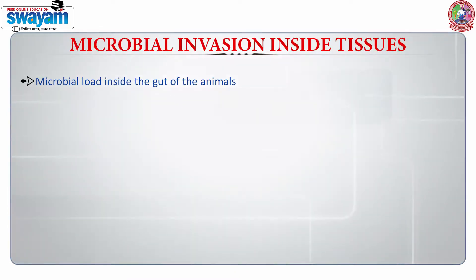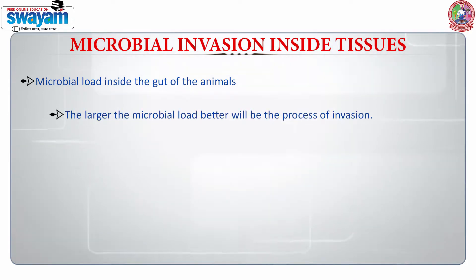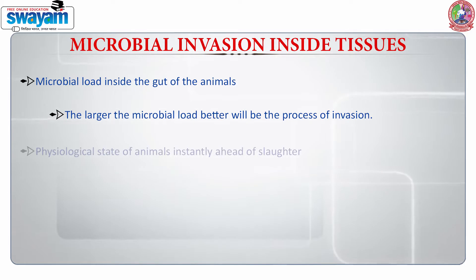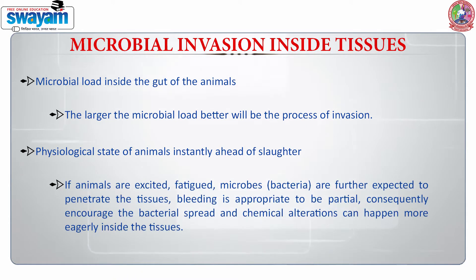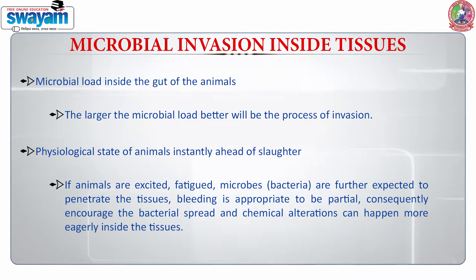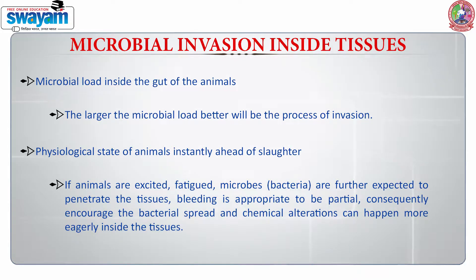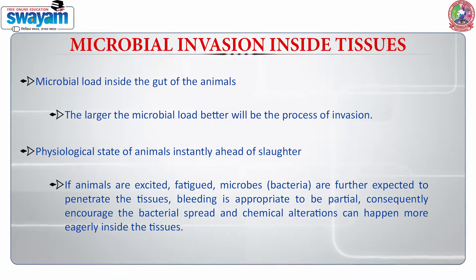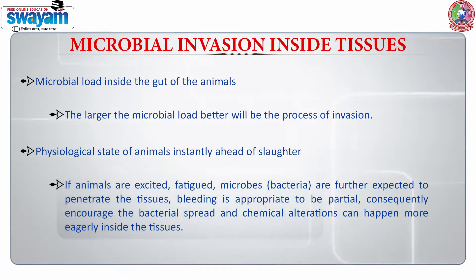When we are talking about the microbial invasion inside the tissues, it is dependent on various factors. The first factor is the microbial load inside the gut of the animal — the larger the microbial load, the better will be the process of invasion. The physiological state of the animal is also very critical ahead of slaughter because it will affect how the microorganisms are able to penetrate. Whether the animal is fatigued or excited will also influence the microflora. The bleeding which is taking place in the animal also encourages bacterial spread and influences the chemical changes that are going to happen inside the tissues.